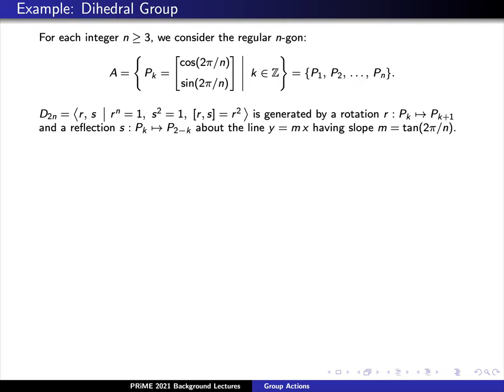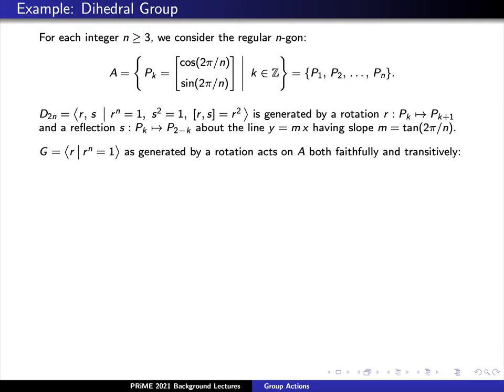Let's actually consider what happens when this group D sub 2n acts on this collection of vertices. We'd like to consider a couple of subgroups of the dihedral group. First, let's consider the subgroup G, which is just the collection of rotations. Namely, let's consider G, which just takes a look at the various powers of our rotation R. Namely, G consists of the actions 1, R, R squared, all the way through R to the n minus 1.